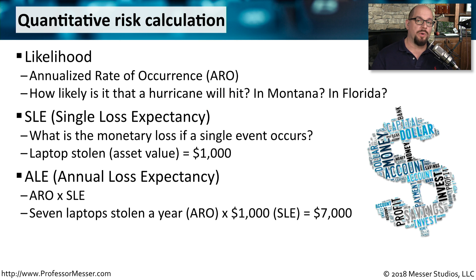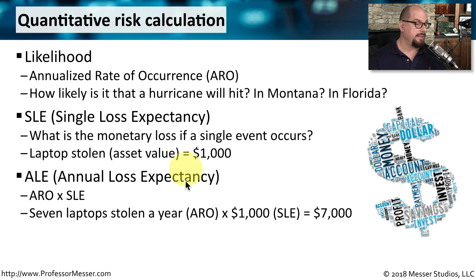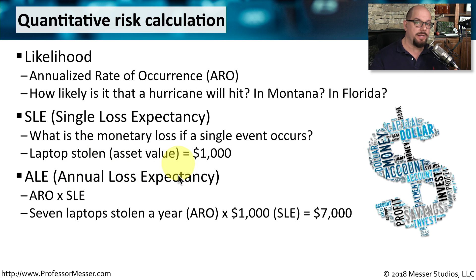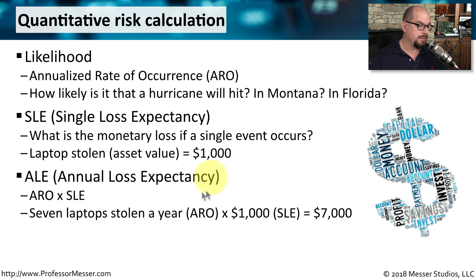Now that we know what a single event may cost, we need to understand how many events might happen in an entire year. This would be the ALE, or the Annual Loss Expectancy. You would multiply the annualized rate of occurrence by the Single Loss Expectancy to calculate the Annual Loss Expectancy. So if a laptop being stolen costs $1,000, and we estimate that there will be seven laptops stolen in a year, we multiply 1,000 times 7 to get our Annual Loss Expectancy of $7,000.